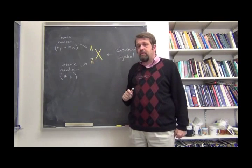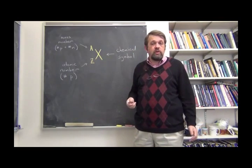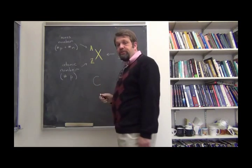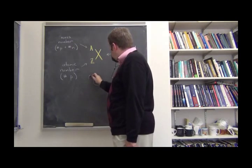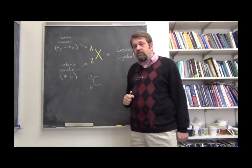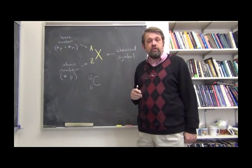So let's take a look at an example. Let's consider a very common nucleus, carbon-12. Carbon, with chemical symbol C, has 12 nucleons in the nucleus, of which 6 are protons and the other 6 are neutrons.